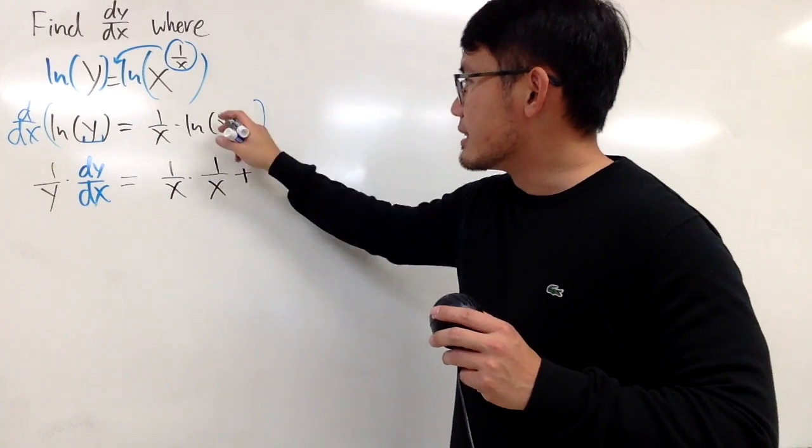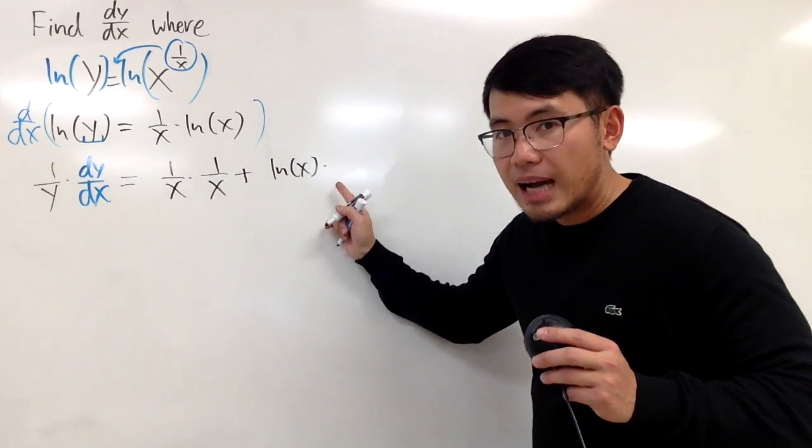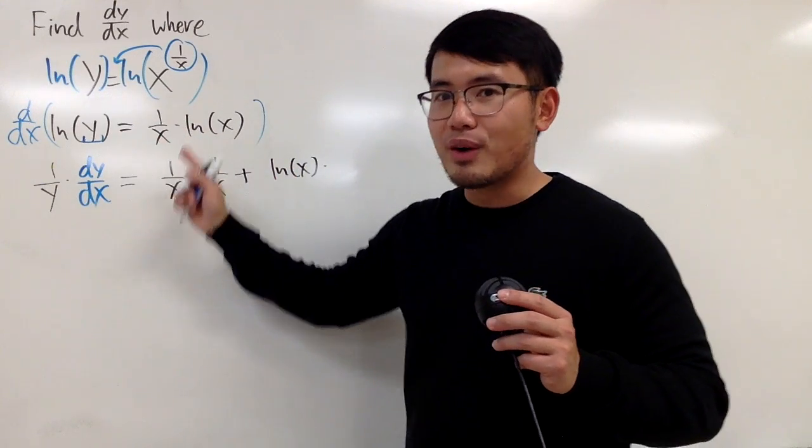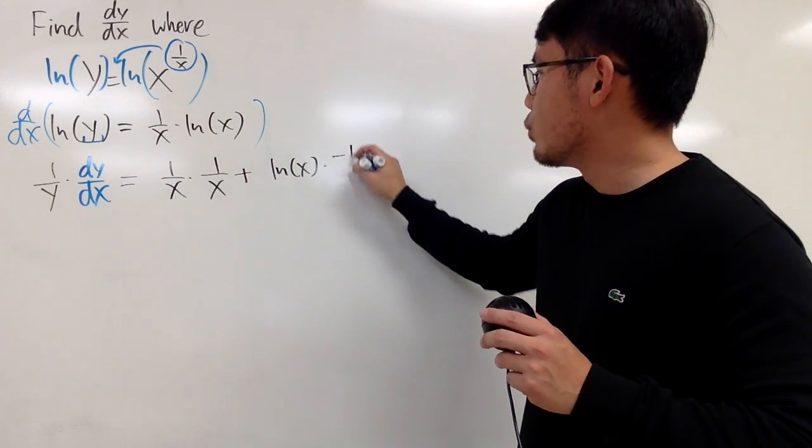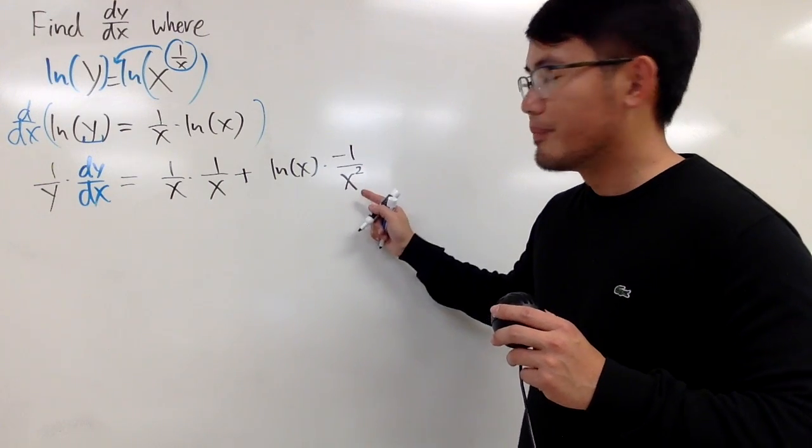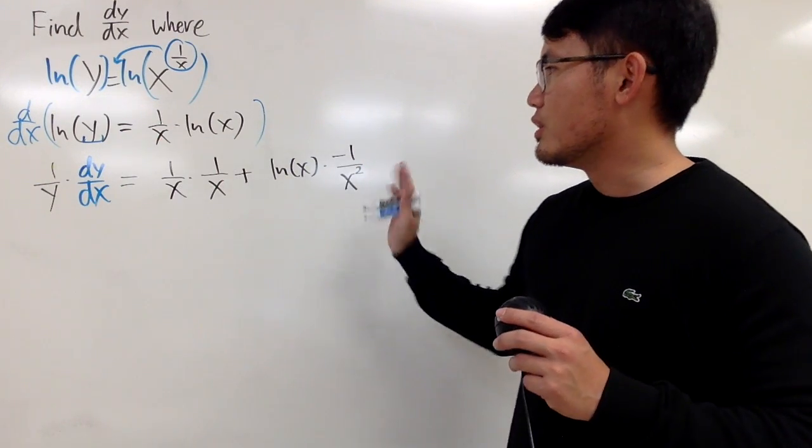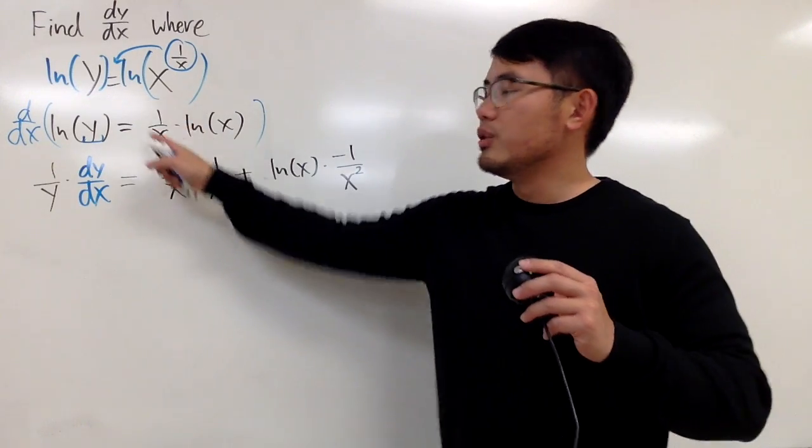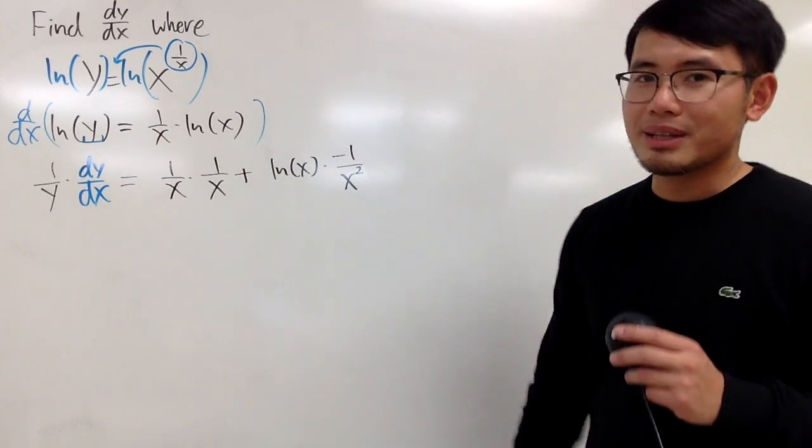Then we add the second function, ln of x, times the derivative of the first function. The derivative of 1 over x is negative 1 over x squared. You can also write this as x to the negative 1 power and use the power rule, but since you deal with this often, you can remember that result.